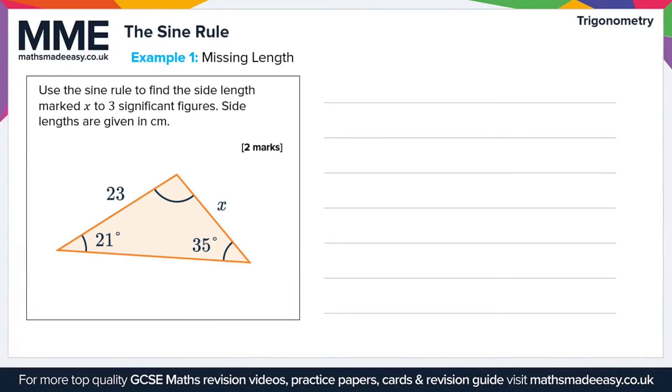Let's move on now to look at an example question. Here we're going to be using the sine rule to find the side length marked X, that's this one down here, to three significant figures. The side lengths are given in centimeters. Because we're looking for a side length here, we're going to be using the version of the sine rule that makes it easier to find the lengths. So that's going to be X over sine 21.